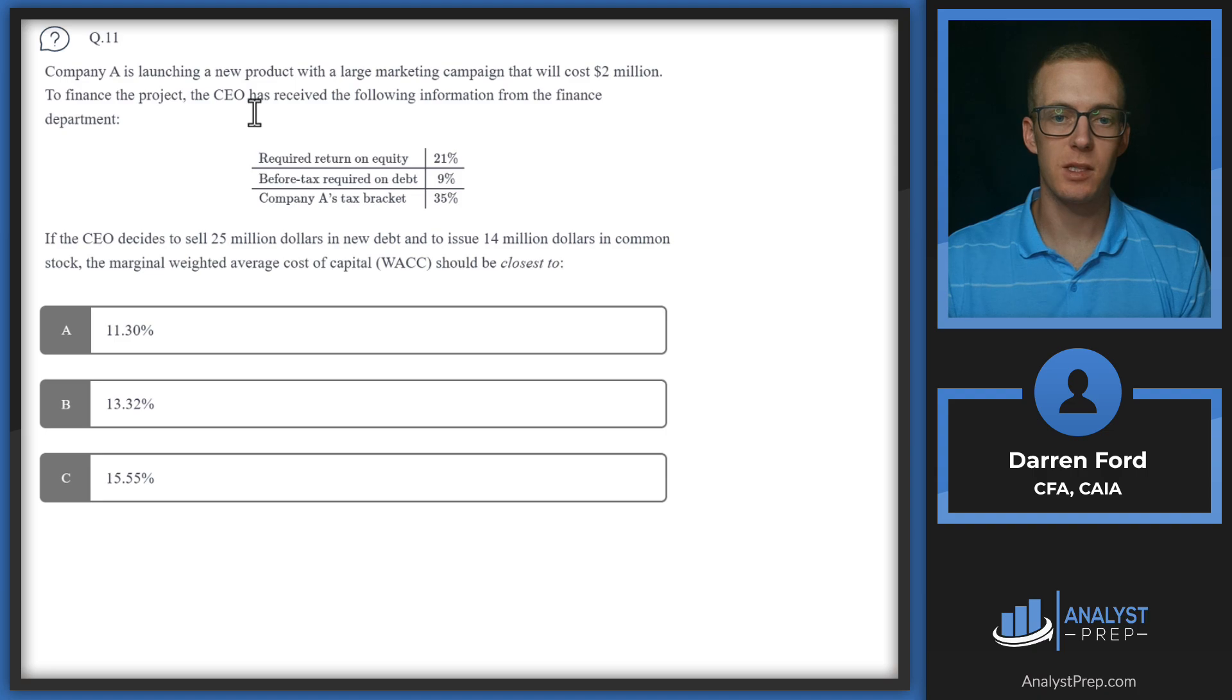Question 11. Company A is launching a new product with a large marketing campaign that will cost two million dollars. To finance the project, the CEO has received the following information from the finance department.